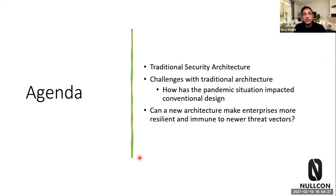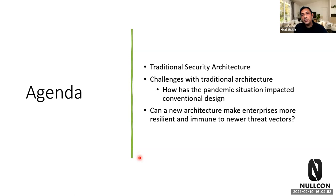Let me give a brief overview of the agenda. What we'll cover today: first, what are the traditional security architectures; second, what are the challenges with those traditional architectures; and especially how the pandemic situation has impacted conventional security architecture design. Finally, we'll look at certain new architectural models and see how they can increase immunity and make your organization more resilient to new threat factors.